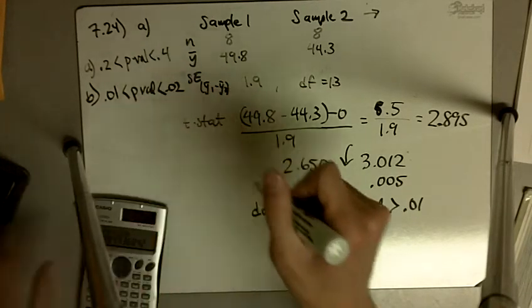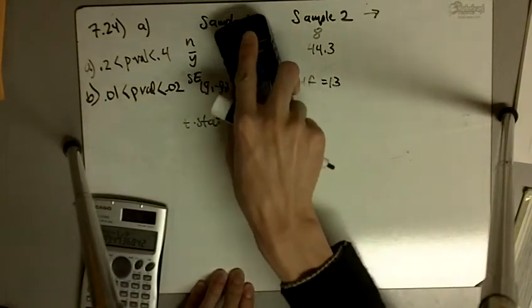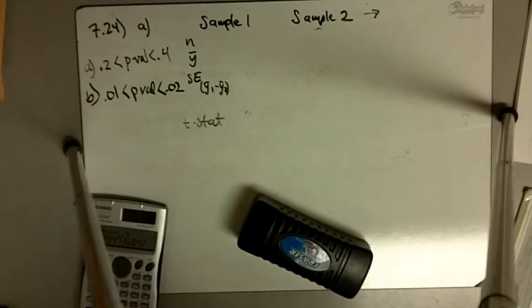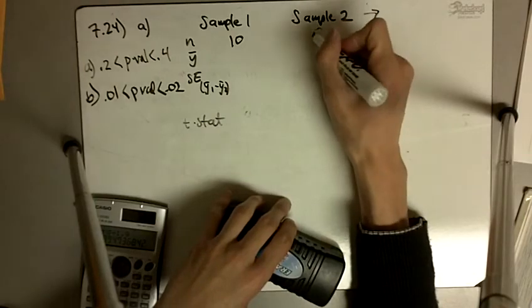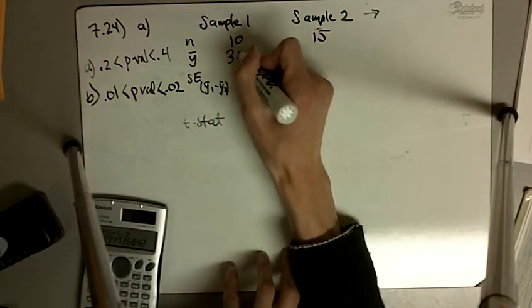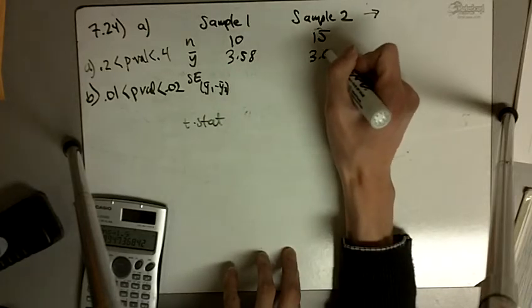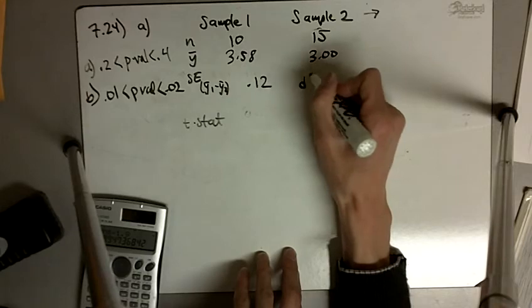Part B: 0.01 less than our p-value less than 0.02. Part C: we've got sample size of 10 and 15, y bar is 3.58 and 3.0, standard error is 0.12, and degrees of freedom is 19.